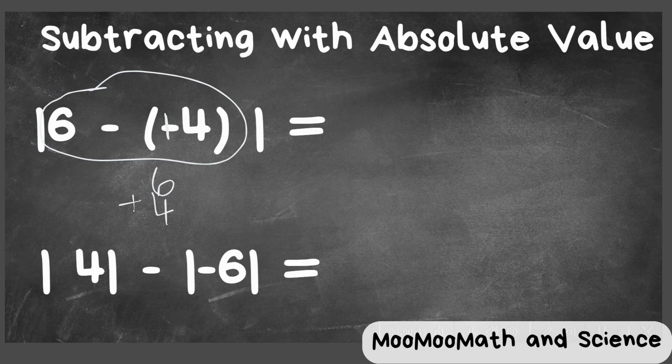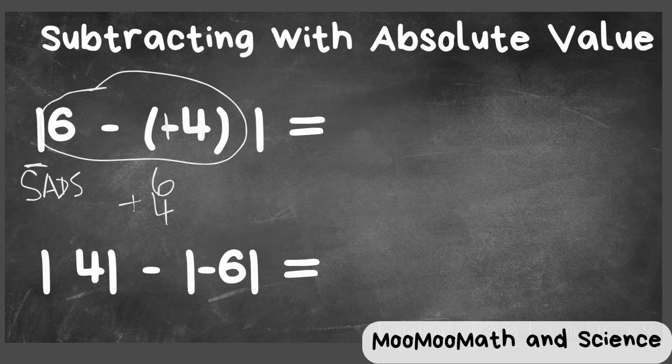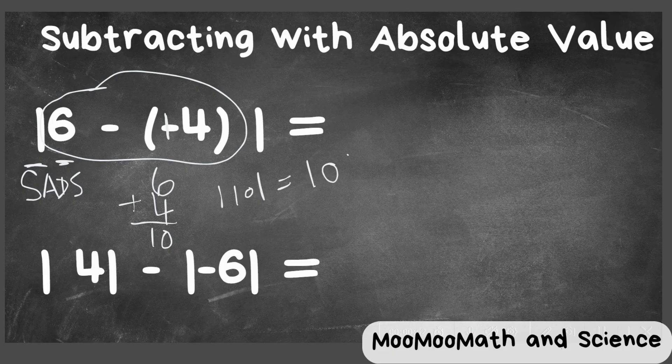Just remember, friendly reminder, SADS: same signs, add; different signs, subtract. So we have the same signs, and that becomes a ten. So it's the absolute value of ten, which is a positive ten.